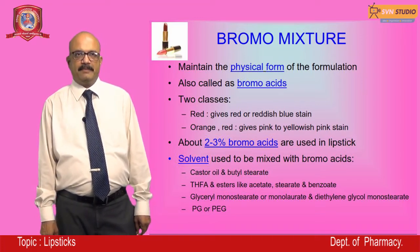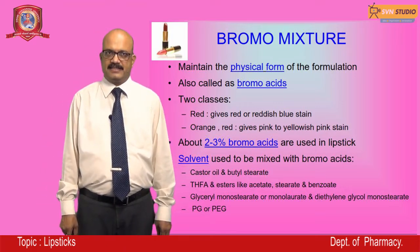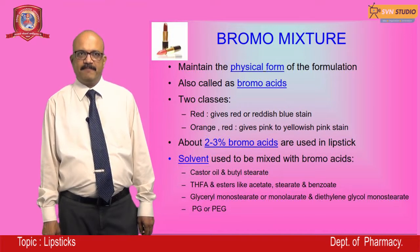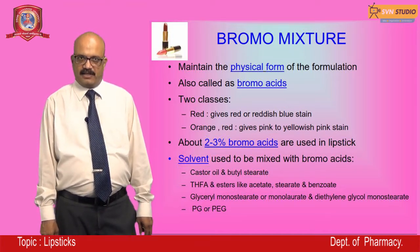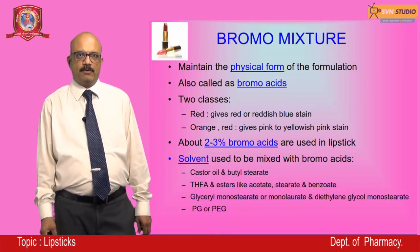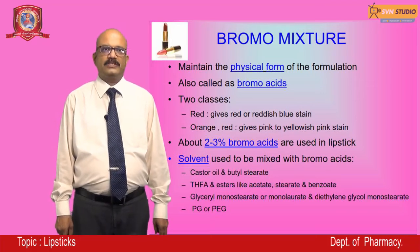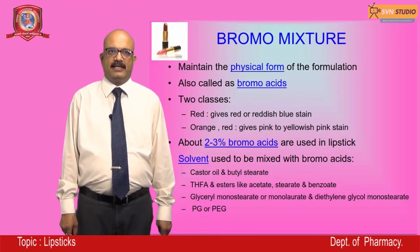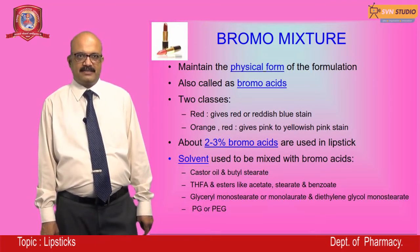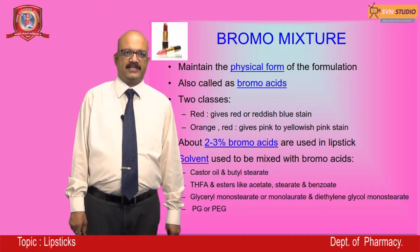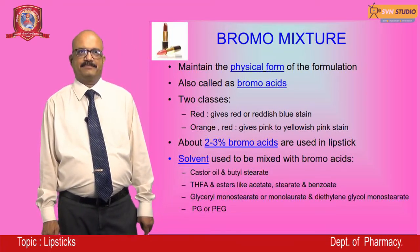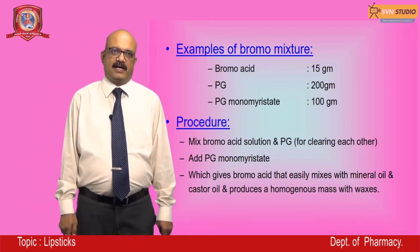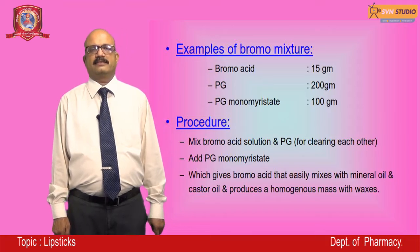Another composition component is the bromo mixtures, also called bromo acids, used to maintain the physical form of the formulation. There are two classes: one providing red to blue shades, and another providing orange-red to pink and yellowish-pink shades. Bromo mixtures should be used at about 2 to 3 percent in lipsticks. Solvents used to mix with bromo acids include castor oil, butyl stearate, THFA esters such as acetate, stearate, and benzoate, glyceryl monostearate, monolaurate, diethylene glycol monostearate, and propylene or polyethylene glycols. An example formulation uses bromo acid at 15 grams, PG at 200 grams, and PG monostearate at about 100 grams.